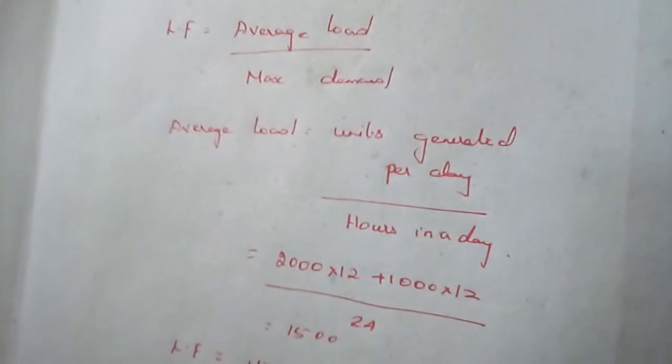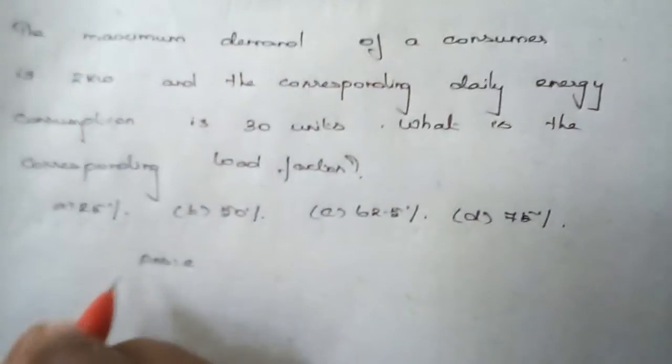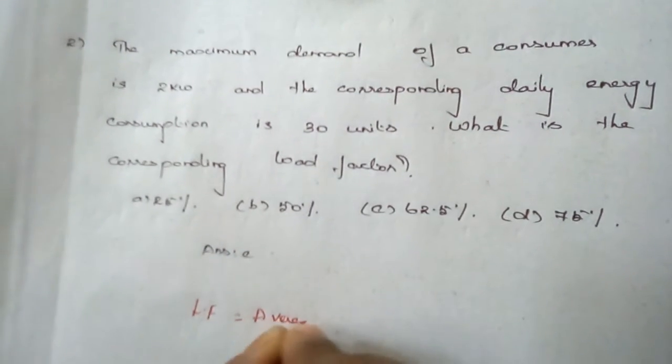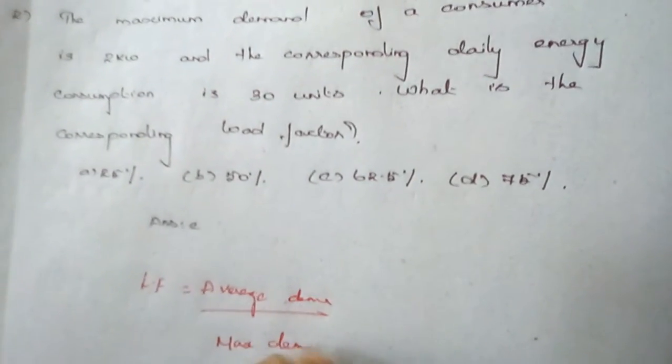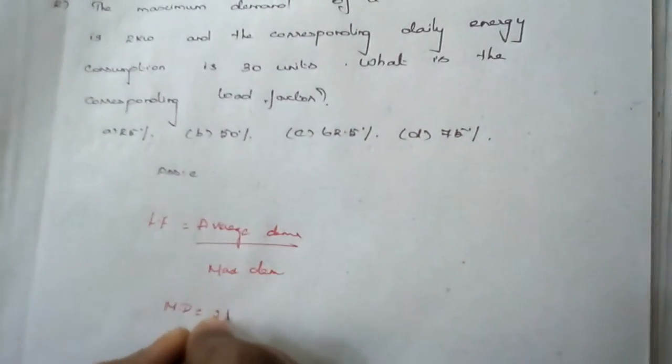The next question, question number two: the load factor formula is load factor equals average demand divided by maximum demand. The maximum demand of a consumer is 2 kilowatt, and the corresponding daily energy consumption is 30 units. We are supposed to find the load factor.